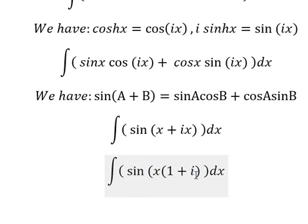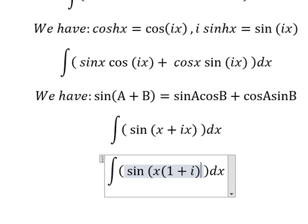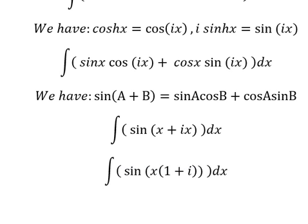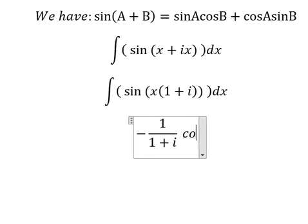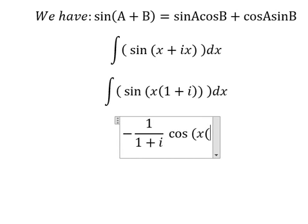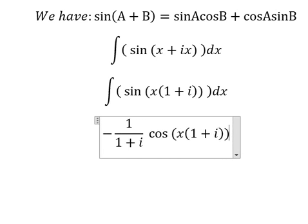And now we have the final answer. The integration of sine of x with one plus i, we have negative one over one plus i, and we have cosine of x multiplied by one plus i, and I will put the constant C.